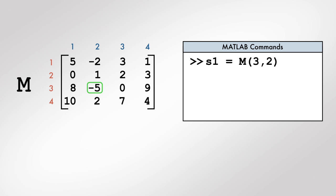To extract multiple elements, such as rows 2 and 3 of column 2, we create a vector containing the row numbers using the square brackets, and use that vector as the row index.